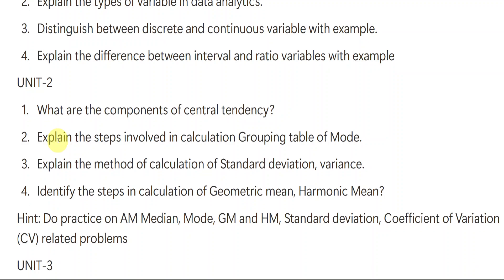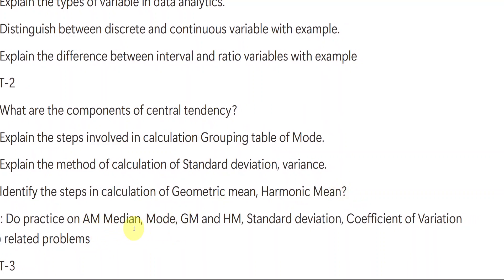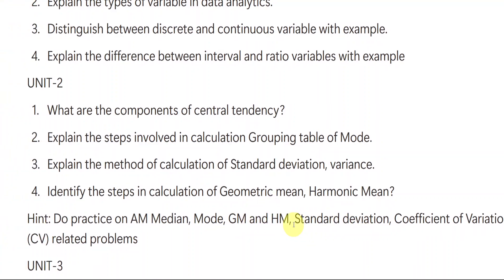From unit number two, the important questions are: What are the components of central tendency? Second: Explain the steps involved in calculation of grouping table of mode. Third: Explain the method of calculation of standard deviation and variance. Fourth: Identify the steps in calculation of geometric mean and harmonic mean. Also make sure you practice arithmetic mean, median, mode, GM, HM, standard deviation, and coefficient of variation related problems from unit number two.